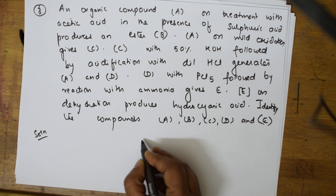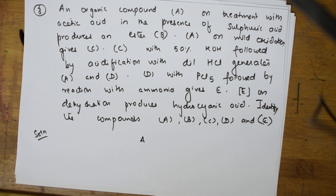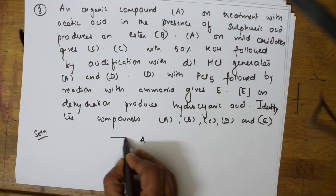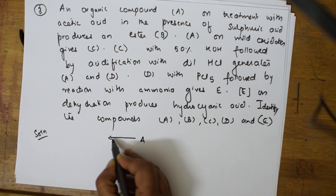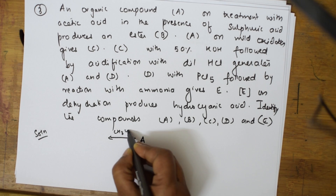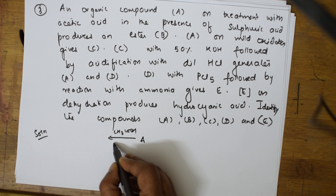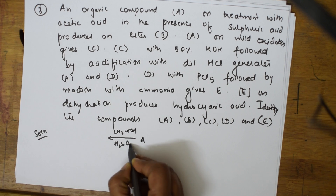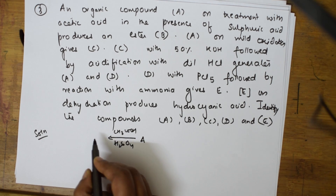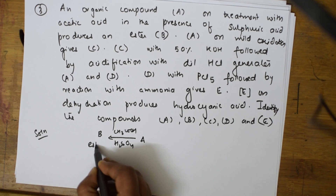They said an organic compound A was treated with acetic acid in the presence of sulfuric acid, and it has produced an ester B. So, B is an ester.